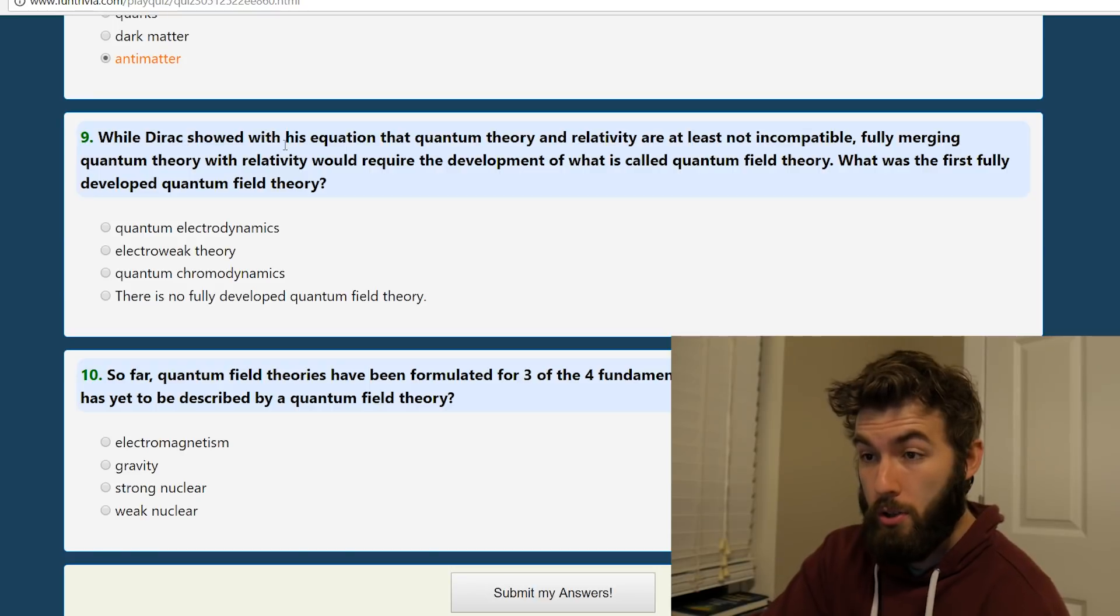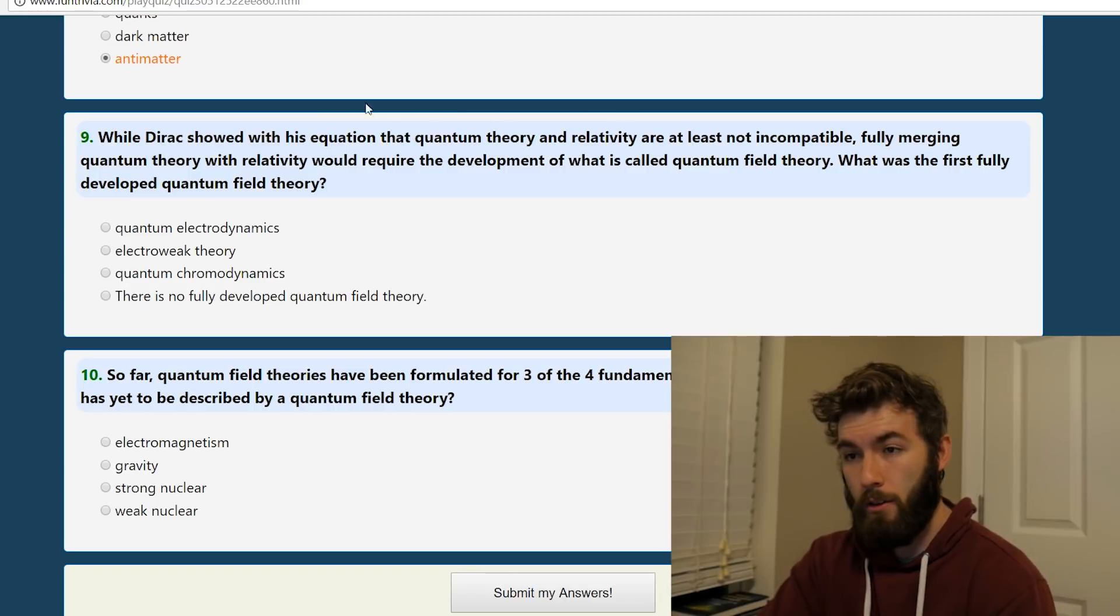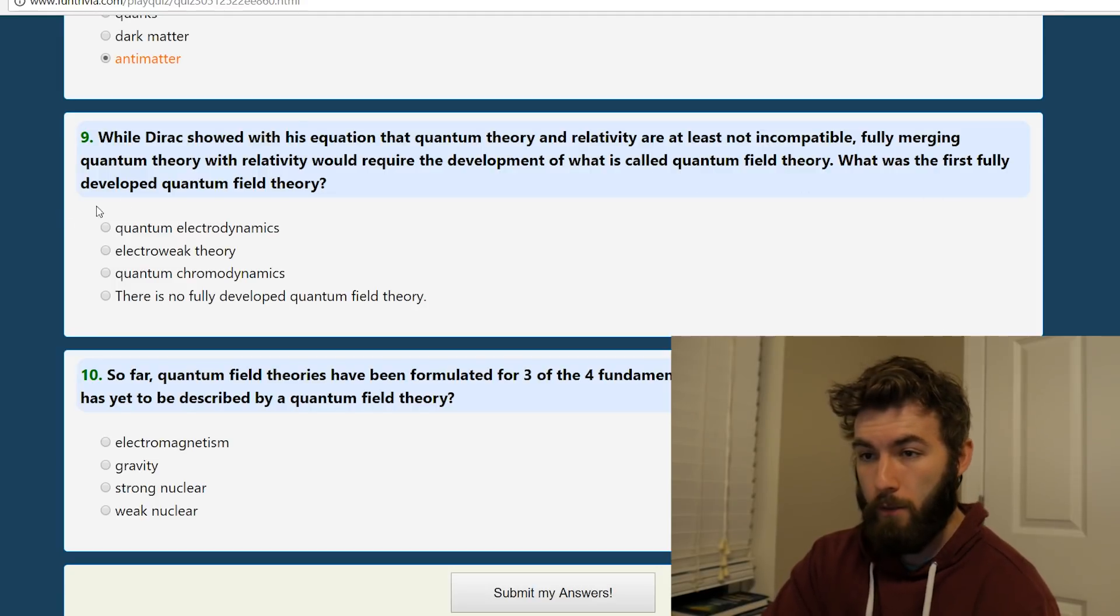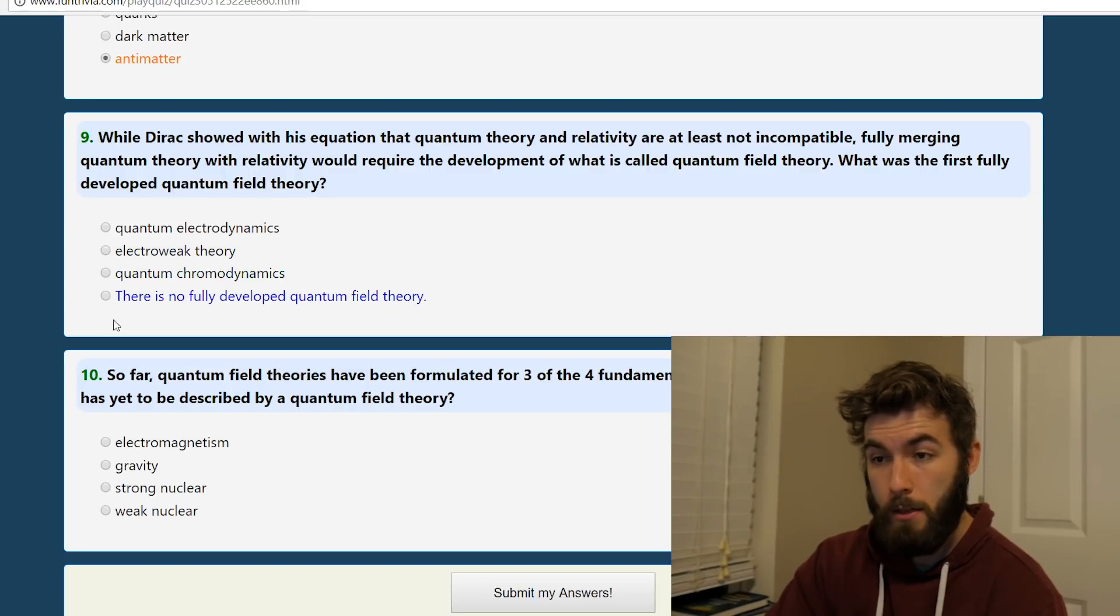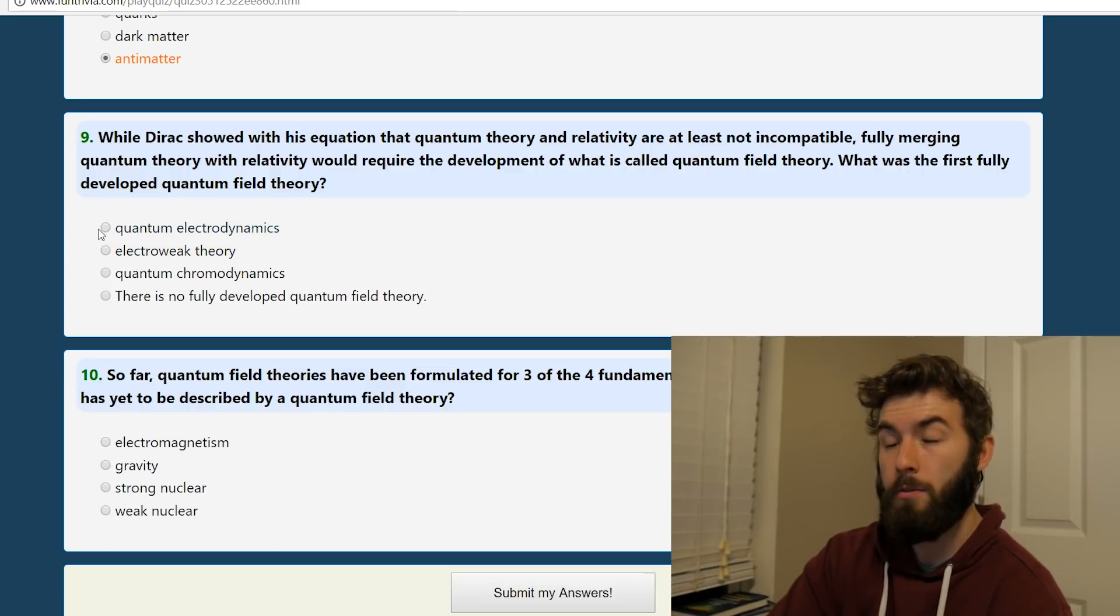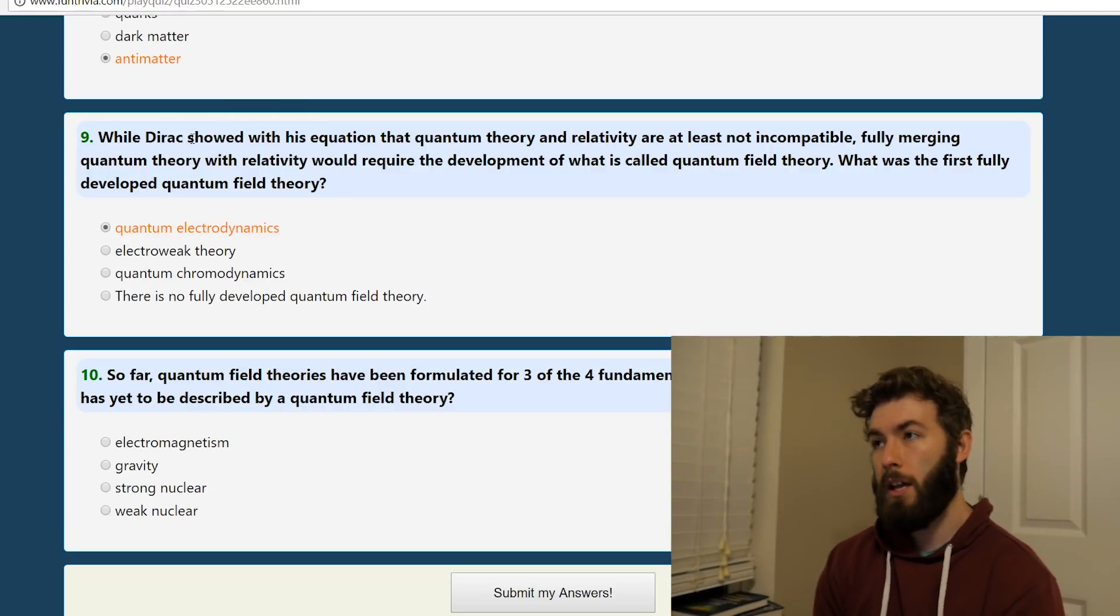Well, Dirac showed with his equation that quantum theory and relativity are at least not incompatible. Fully merging quantum theory and relativity would require the development of what is called quantum field theory. What was the first fully developed quantum field theory? QED, electroweak theory, QCD, or there is no fully developed? Well that's going to be QCD. QED. You had, I mean, I feel like Dirac sort of worked on that a little bit, and then you had people like Schwinger and Feynman come along. Yeah.